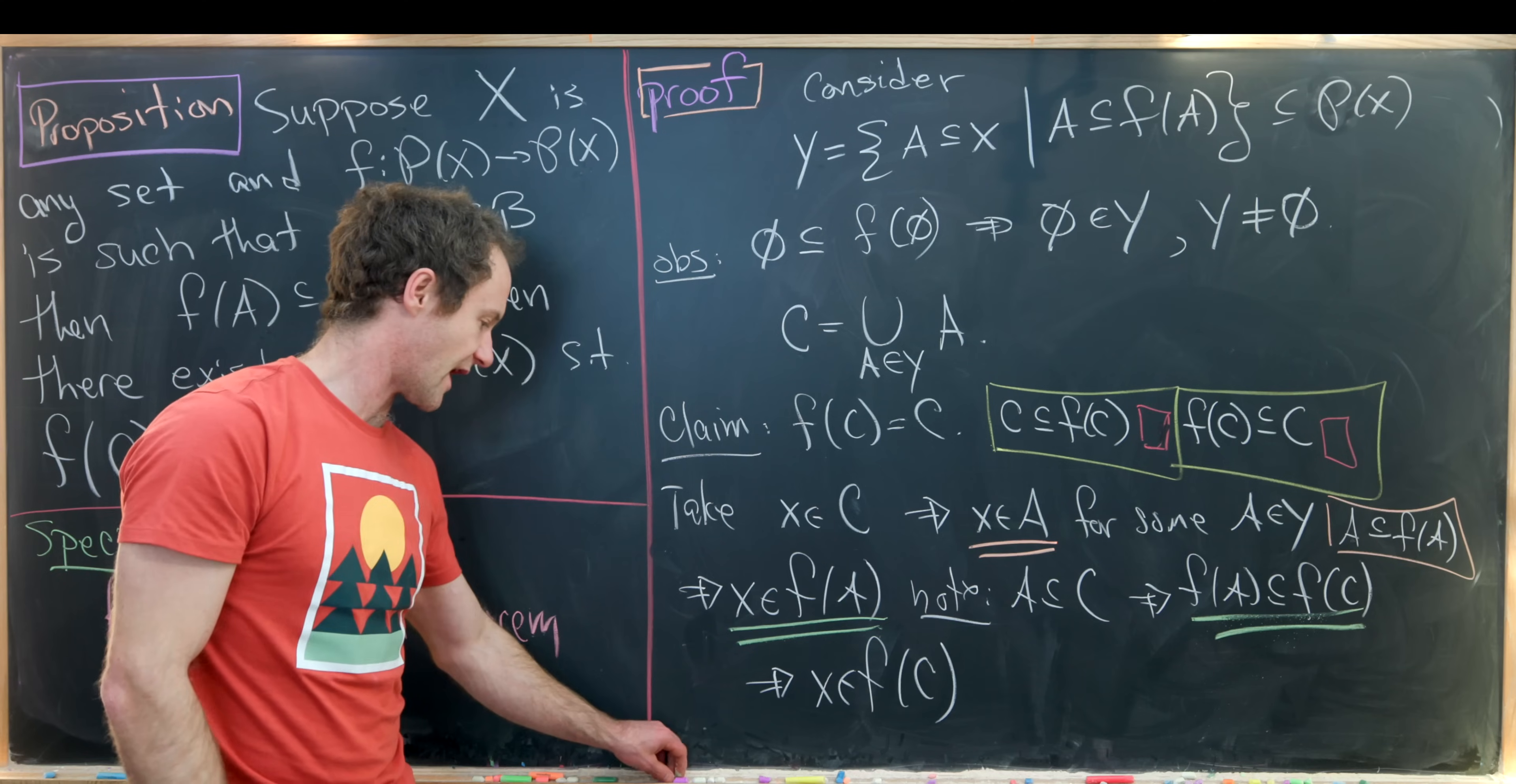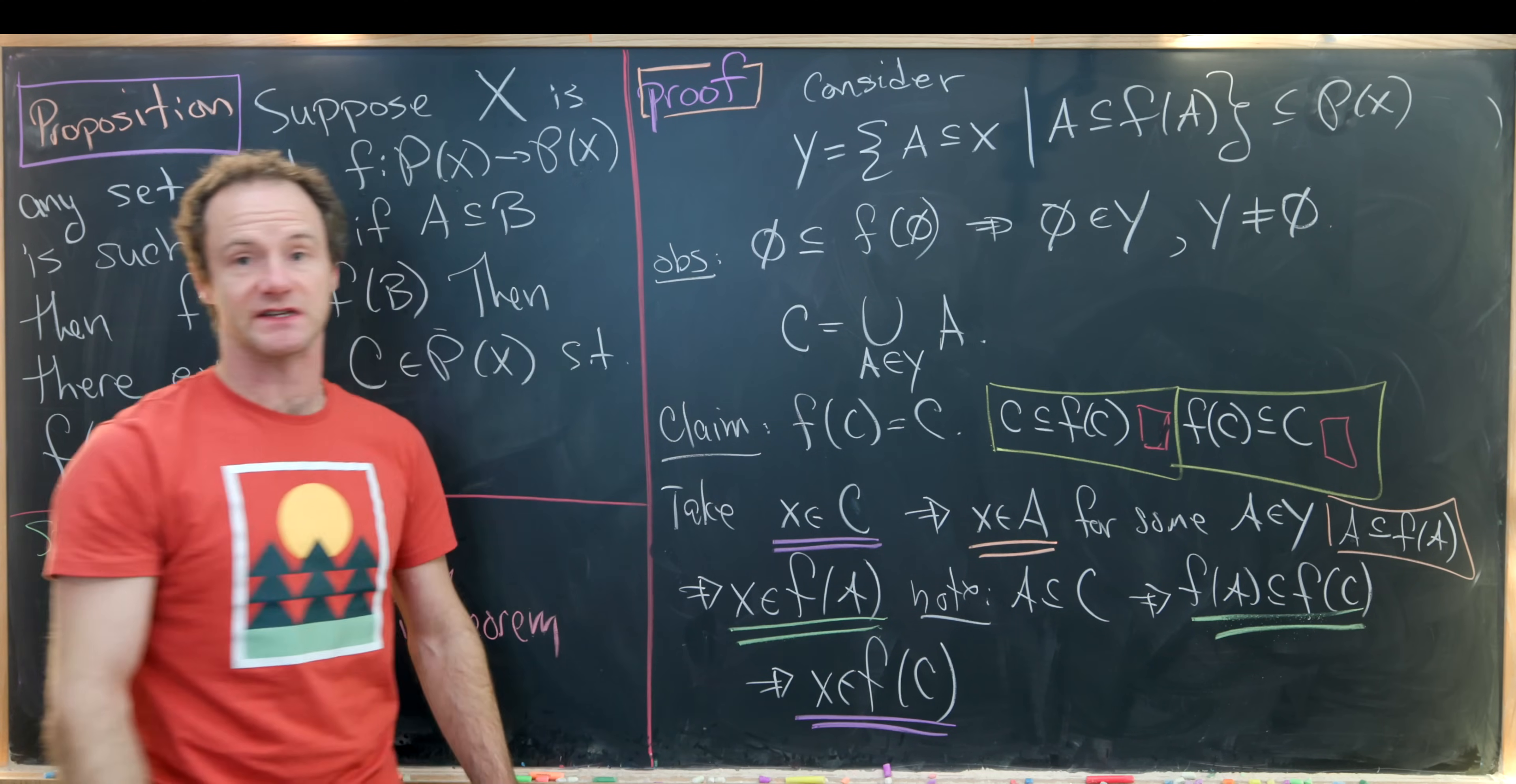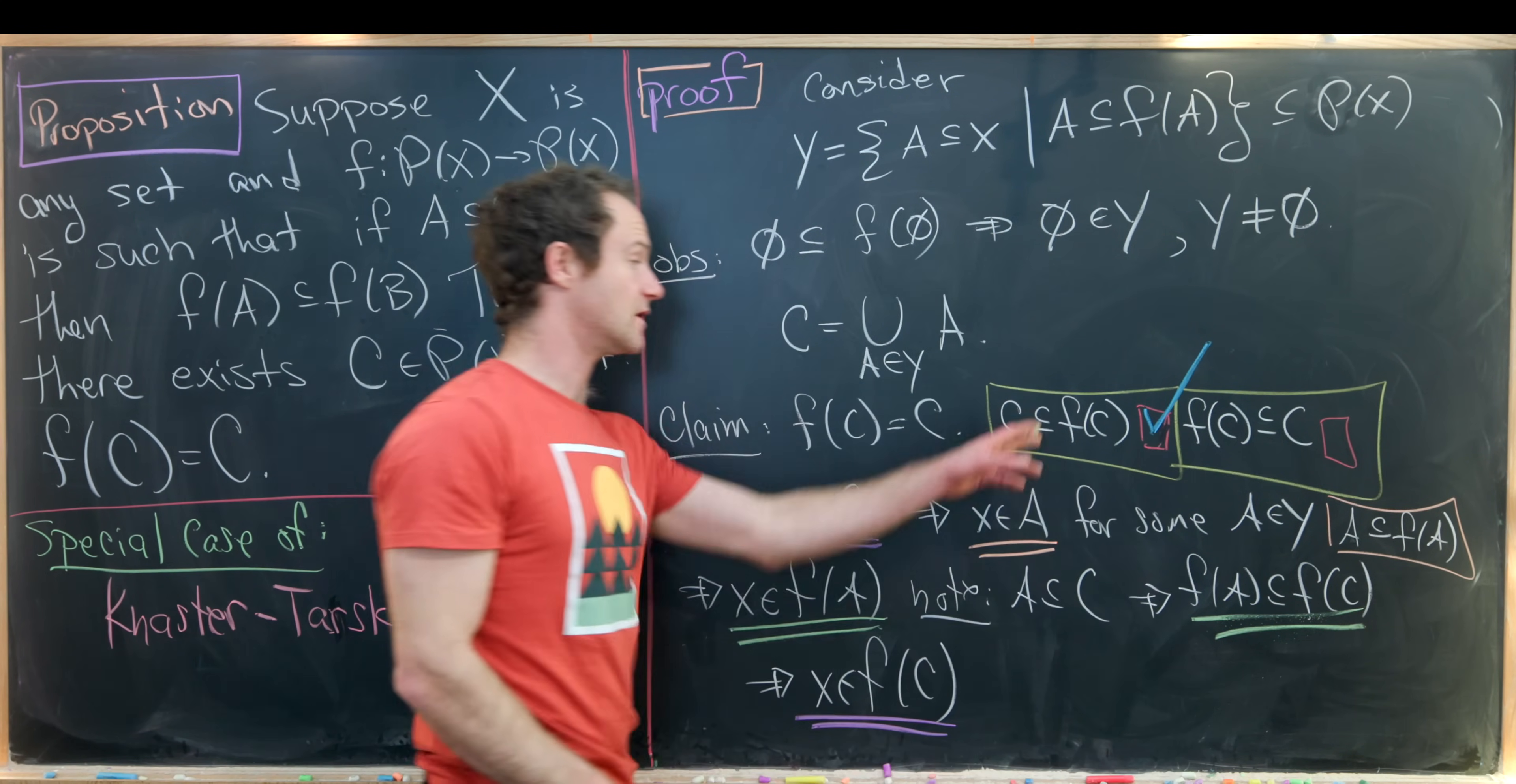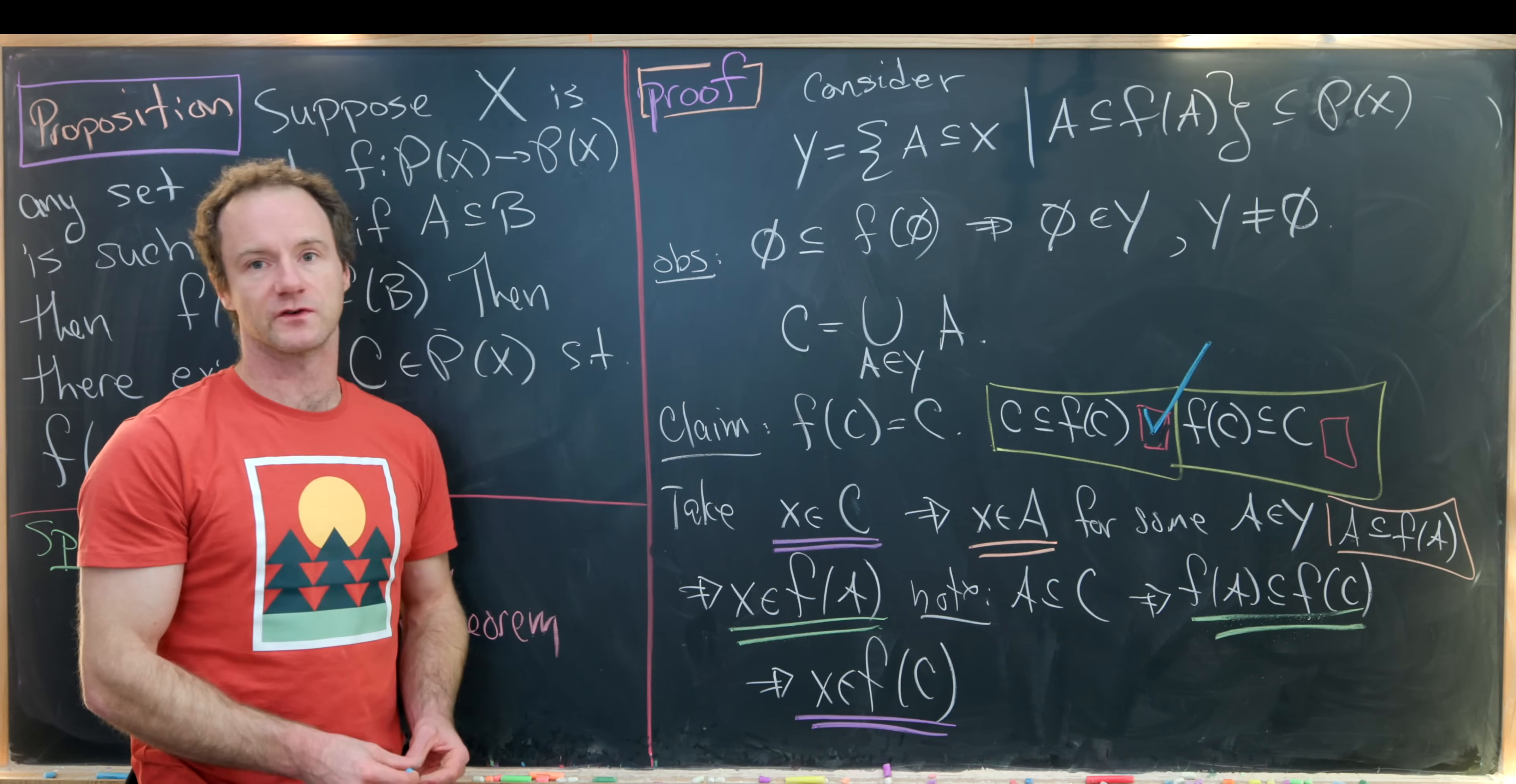But let's see what we have. We started with x is an element from c and ended with x is an element from f of c. But that's exactly what we need for c to be a subset of f of c. So we're done with this first containment. Okay so let's clean this up and we will do the reverse containment.